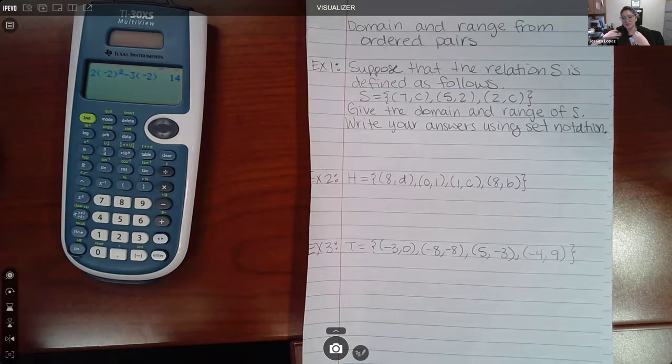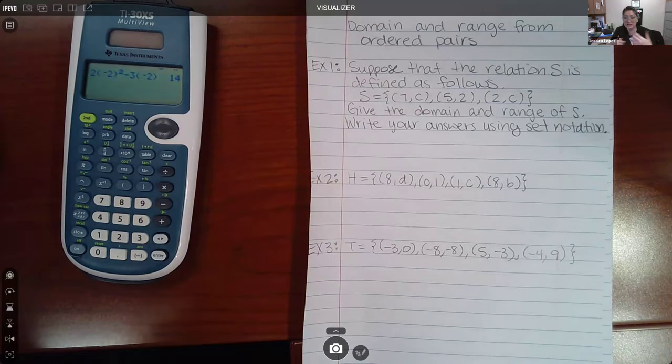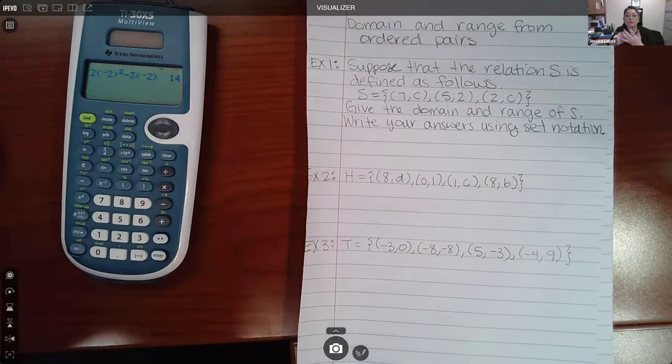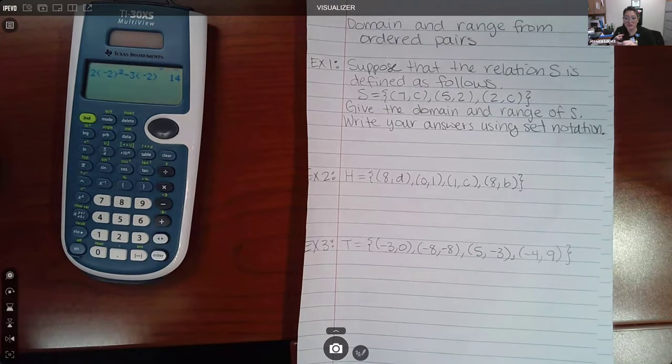Now it's the same directions, it's just the relation is gonna change. Its name is gonna change - it's no longer gonna be called S, it's gonna be called eventually H and then T. But we're doing the same directions.